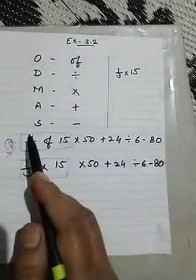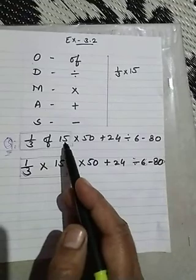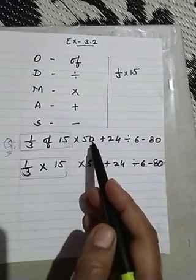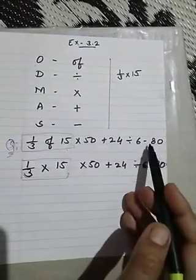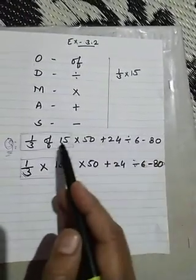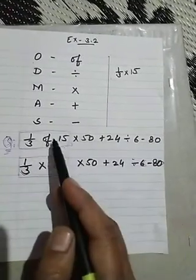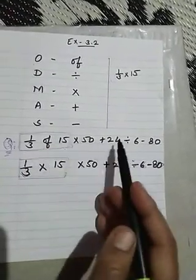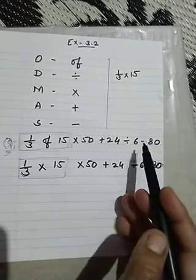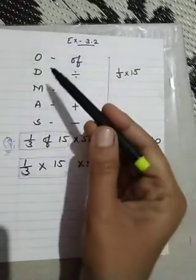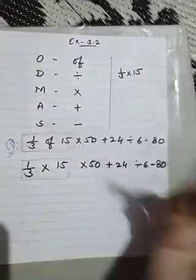Here I have written one example: 1/3 of 15 × 50 + 24 ÷ 6 − 80. Here you are able to see all operations: of, divide, multiply, add, and subtract. According to this sequence we have to solve this question.